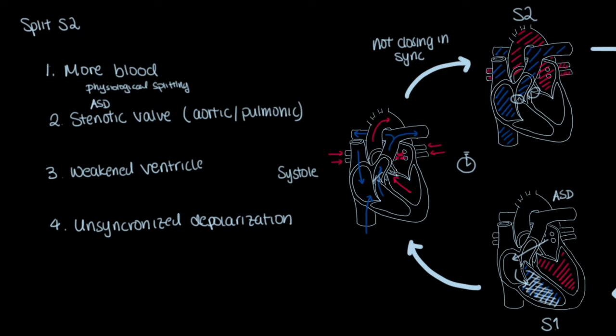Similarly, if you were to have conditions such as pulmonary hypertension, the right ventricle will again have to generate more pressure before the valve starts opening, thus delaying its systolic cycle.